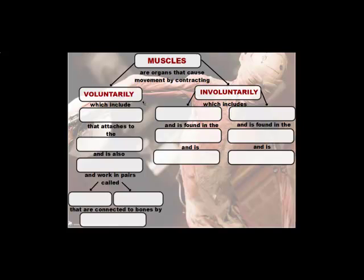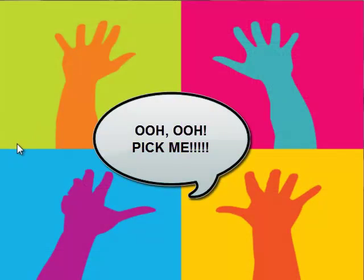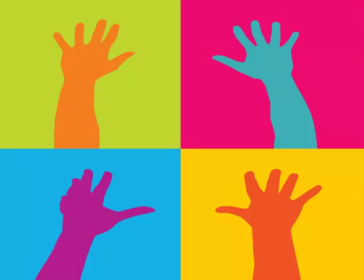Now, we're going to start off with voluntary contractions first. Voluntary contractions are muscle contractions that you can control. So, if you were sitting in class one day and your teacher asks a question looking for students to participate, you have control of your muscles to either raise your hand or not raise your hand. You control your muscles to put your hand up to get called on, or you can keep your hands where they are.